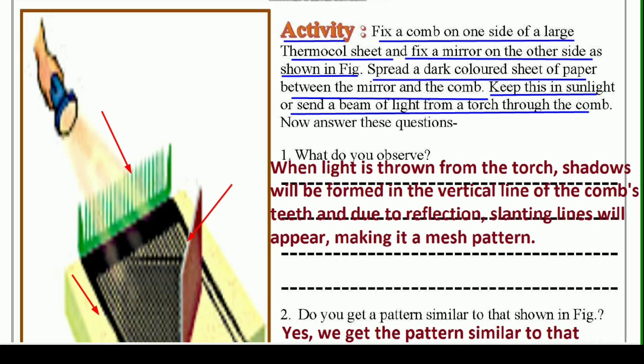Then keep this in sunlight or send a beam of light from a torch through the comb. Ab aapko kya karna hai, ya to isko sunlight mein rakhna hai ya phir ek torch se iske upar beam of light, yani prakash kirnye daalni hai through the comb. Now answer these questions.